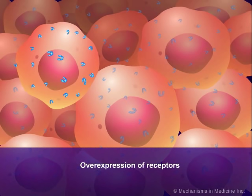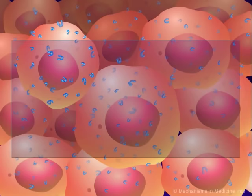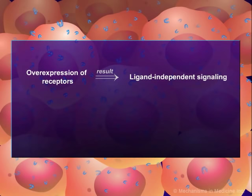This gives the tumor cell increased potential to be triggered into a growth phase by the binding of ligands to the excess receptors. The more receptors expressed, the more binding sites are available for the ligands. Gross overexpression of growth factor receptors can result in ligand-independent signaling, where receptors are active in the absence of stimulating molecules.